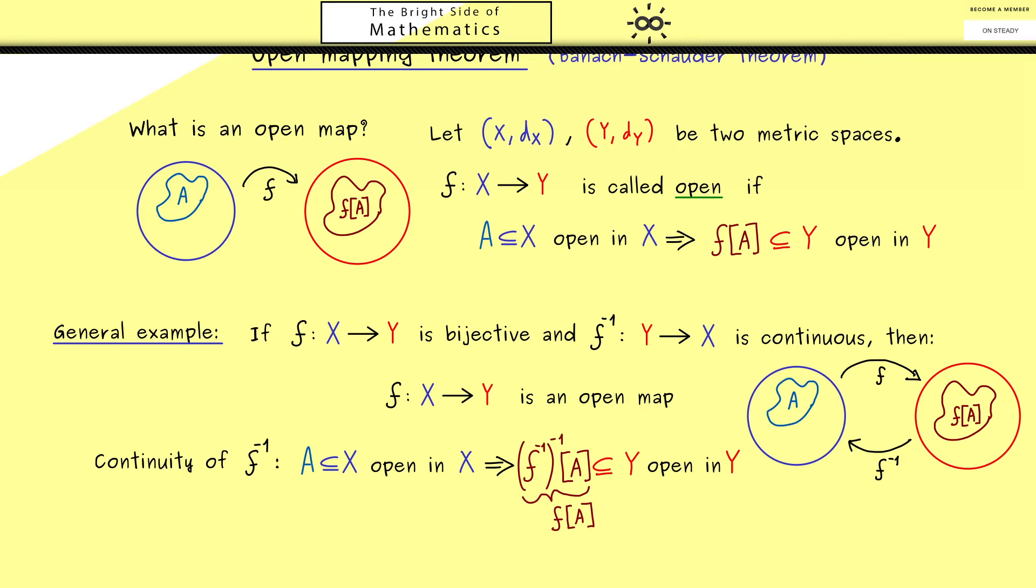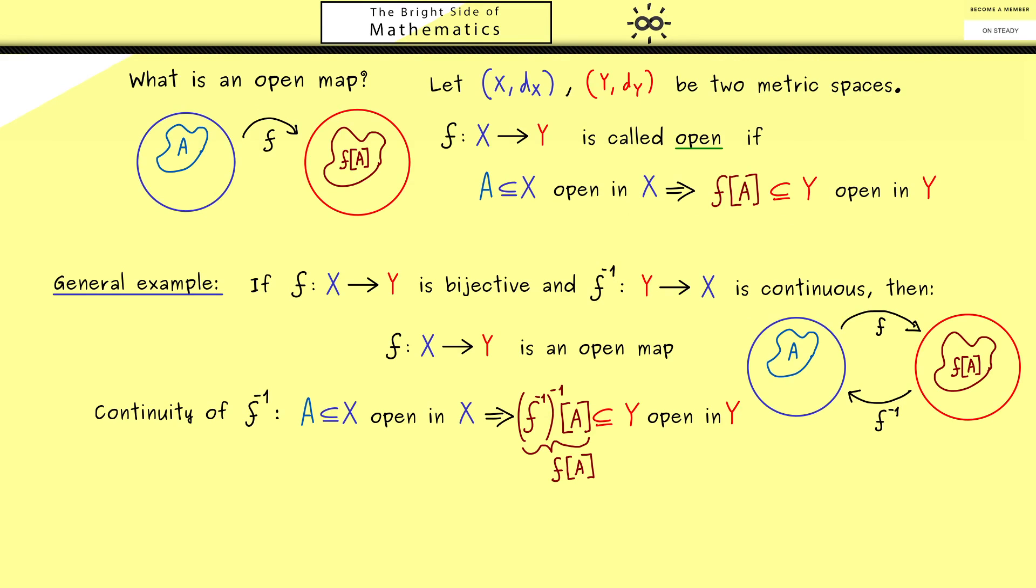Okay, then let's write down some concrete examples of open maps. Maybe a simple example would be to look at a normal function between the real numbers. Of course, R is just given with the standard metric, which means the absolute value, and I want to send x to x cubed. This has to be an open map because f is bijective and the inverse is continuous.